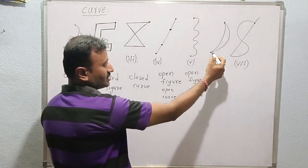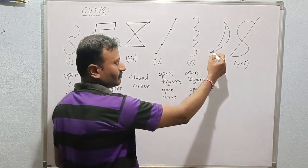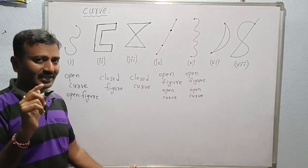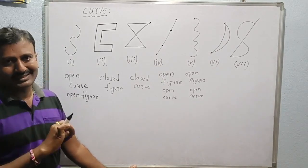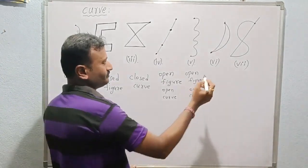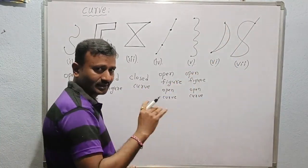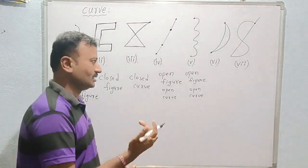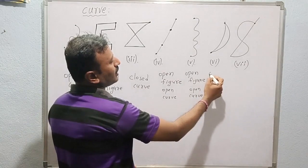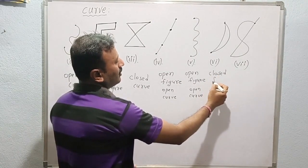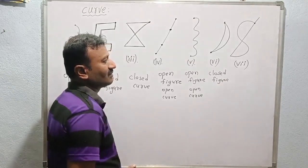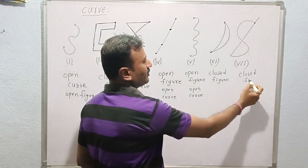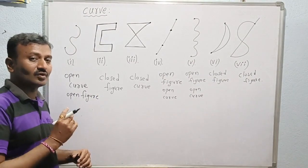Figure six is a closed curve. Whenever we draw it, the starting point intersects with the ending point — not at any other point, only at that one point — so it is treated as a closed figure. Figure seven is also a closed figure.